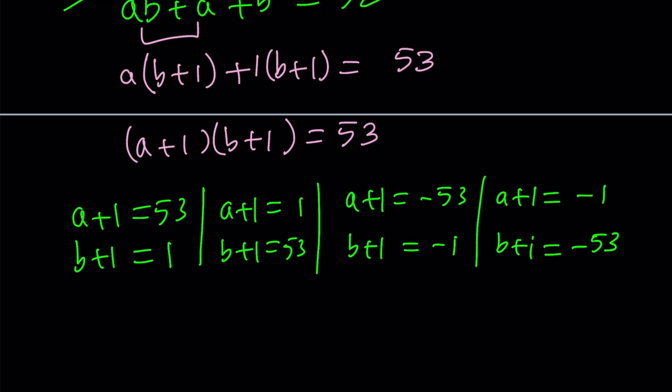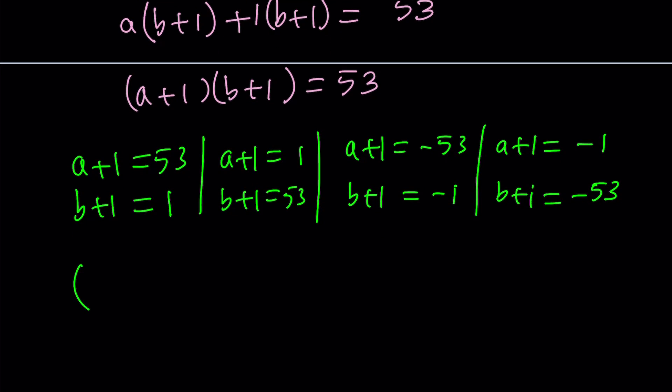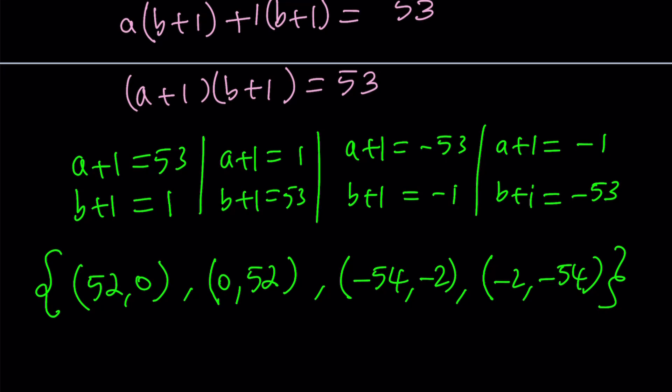Let's go ahead and write the solution as an ordered pair in each case. First one gives us 52, 0. I'm writing the a first. So these are a, b ordered pairs. The second one gives us 0, 52. As you can see, a and b are interchangeable. And then this one gives us negative 54, negative 2. And finally, negative 2, negative 54. So those are going to be all the solutions to this Diophantine equation.